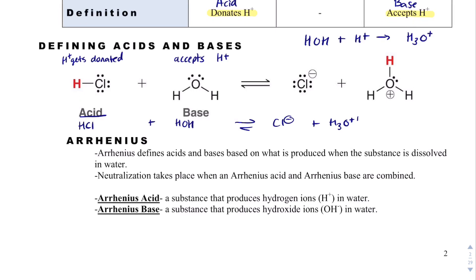An Arrhenius acid is one that produces hydrogen ions in water, where an Arrhenius base is something that produces hydroxide ions in water. And that'll make more sense later. We always like to think of hydroxide as being a strong base.